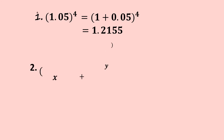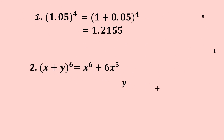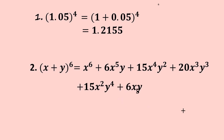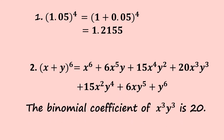For the second example, (x + y) to the power of 6: using binomial expansion you get the full expansion as the final answer, and from there you can calculate the binomial coefficient of x cubed y cubed, which in this case is 20.